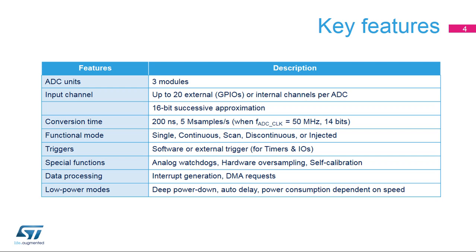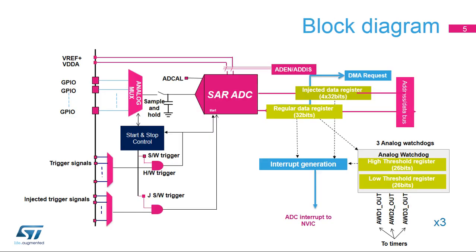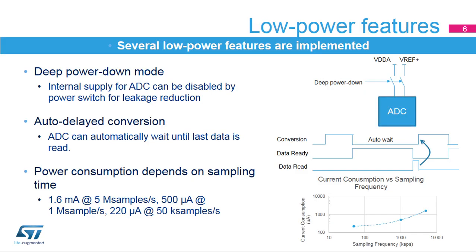For power-sensitive applications, the ADC offers a number of low-power features. This slide shows the general block diagram for the three analog-to-digital converters embedded in the STM32H7. The STM32H7's ADCs support a deep power-down mode — when the ADC is not used, it can be disconnected by a power switch to further reduce leakage current. Auto-delayed mode makes the ADC wait until the last conversion data is read before starting the next conversion, avoiding unnecessary conversions and reducing power consumption.